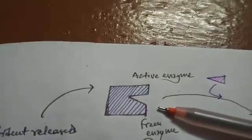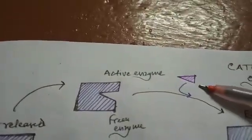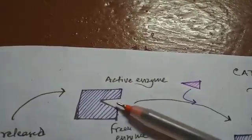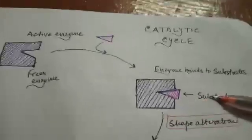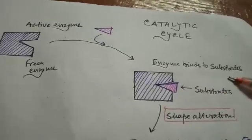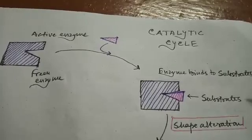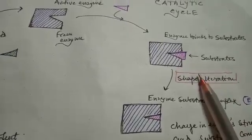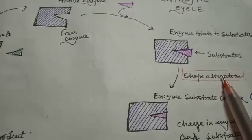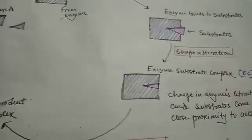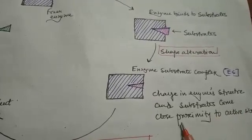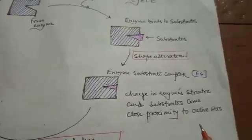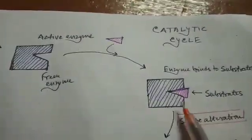At first the enzyme is free. After that, the substrate, which is very specific for this particular enzyme, will diffuse and will bind to it. They will form the enzyme-substrate complex. After the binding of the substrate to this particular enzyme, the substrate induces some alteration of the shape of the enzyme. This alteration of shape is important so that the enzyme's active site and the substrate come into very close proximity.